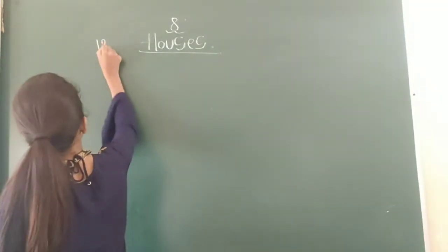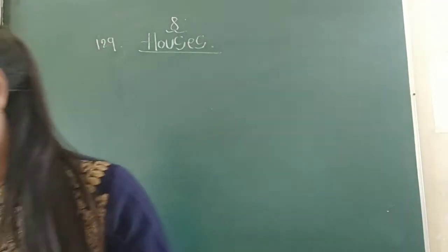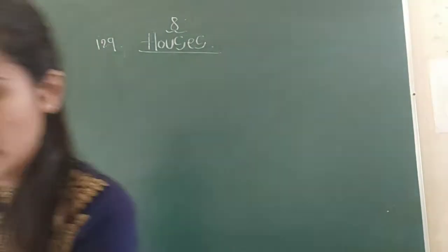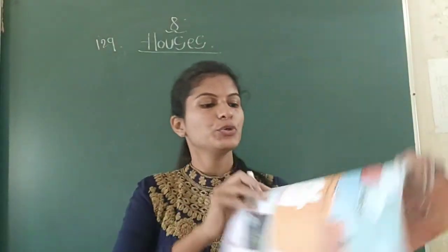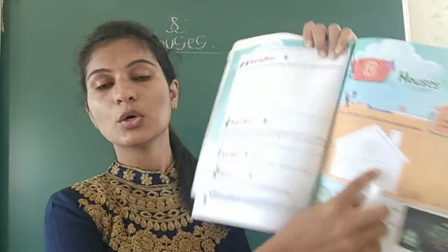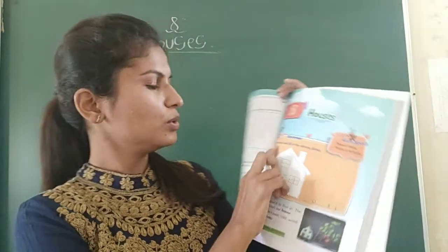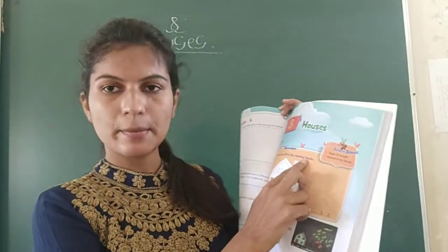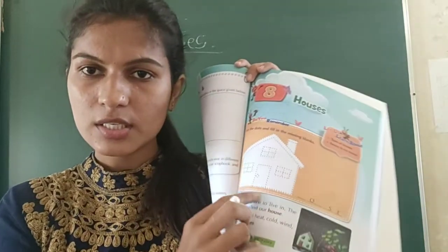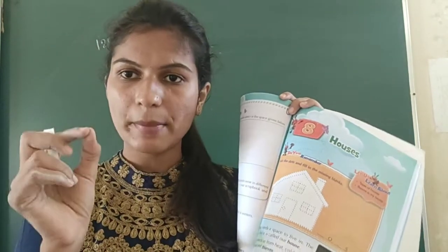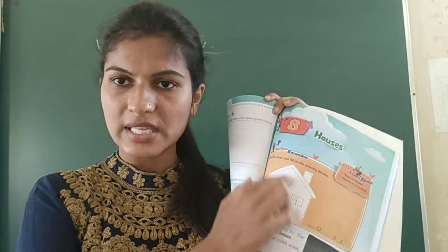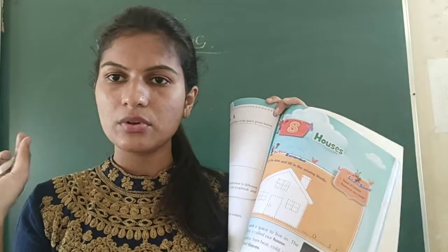In page number 129, you can see a picture of a house. By the design you can see it is a picture of a house. You have to join the dots and fill in the missing blanks. Can you see these small dots? Using a pencil, just join all of these dots to make a beautiful home.